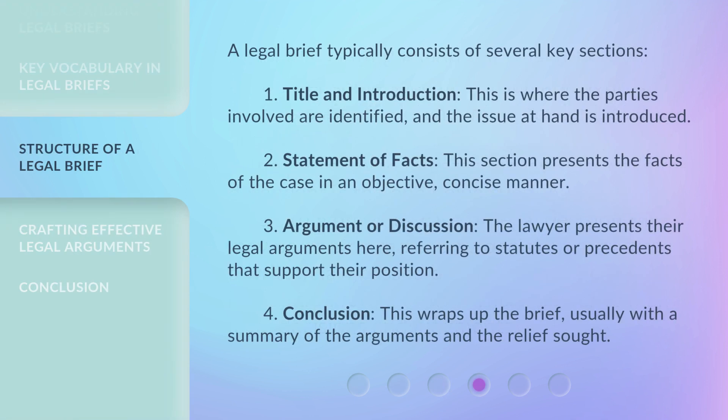A legal brief typically consists of several key sections. 1. Title and Introduction: this is where the parties involved are identified, and the issue at hand is introduced. 2. Statement of Facts: this section presents the facts of the case in an objective, concise manner. 3. Argument or Discussion: the lawyer presents their legal arguments here, referring to statutes or precedents that support their position. 4. Conclusion: this wraps up the brief, usually with a summary of the arguments and the relief sought.